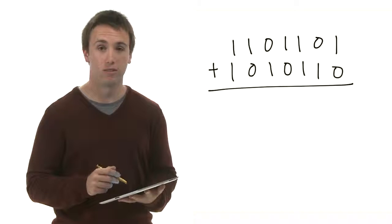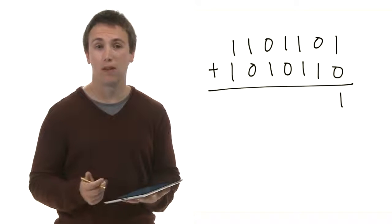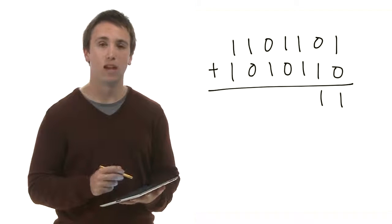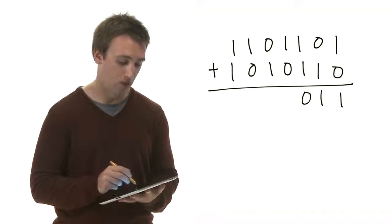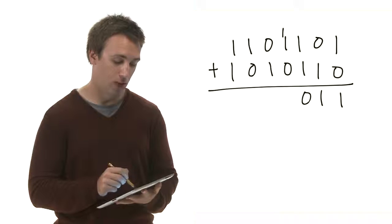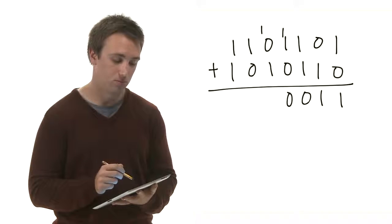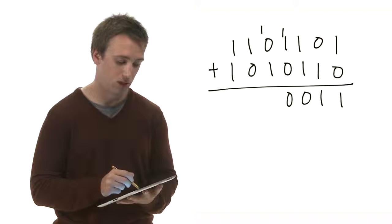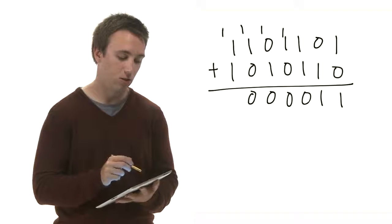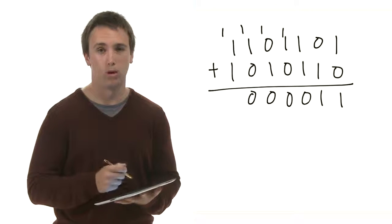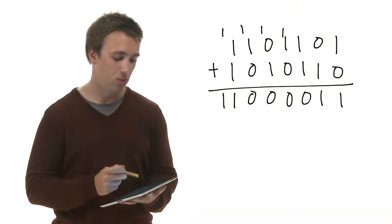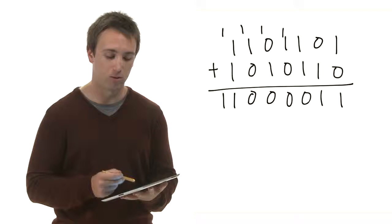On the right, we have 1 plus 0 = 1. Moving to the left, we have 0 plus 1 = 1. Moving left again, we have 1 plus 1: we write a 0 and carry a 1. Then 1, 1, 0 — we write a 0, carry a 1. Then 1, 0, 1 — again 0, carry a 1. Then 1, 1, 0 — 0 again, carry a final 1. And finally 1, 1, 1 — so we have a 1 and a final 1 on the left. The result: 1 1 0 0 0 0 1 1.